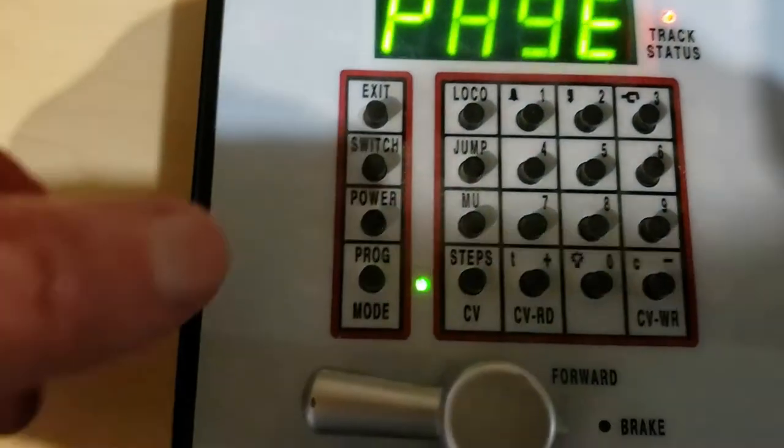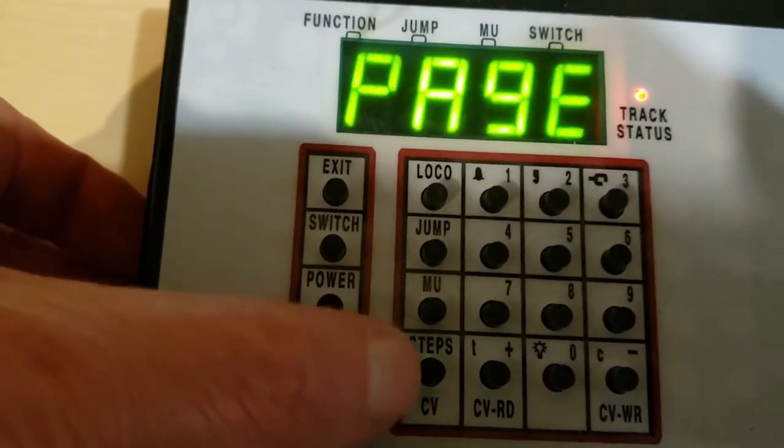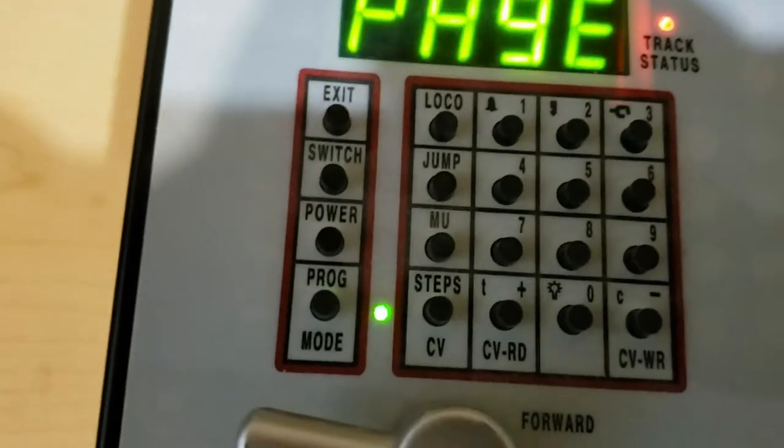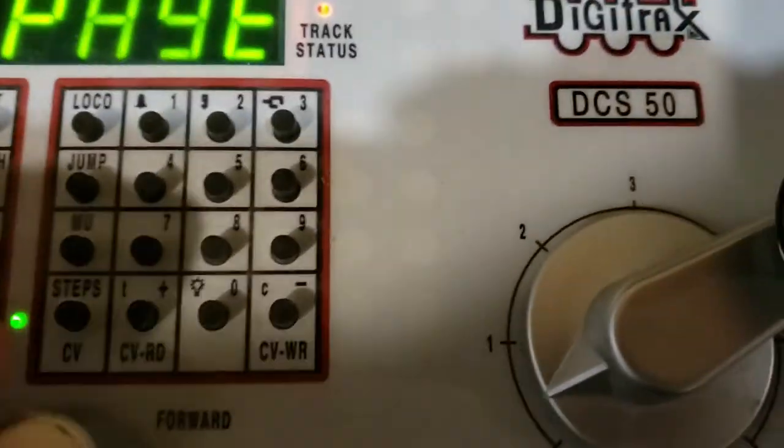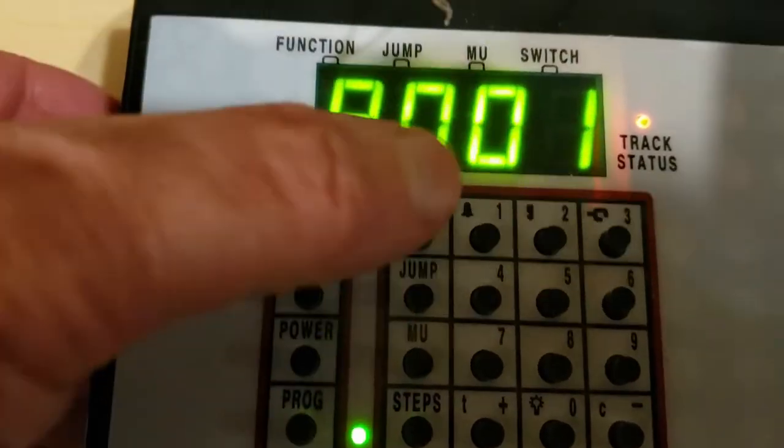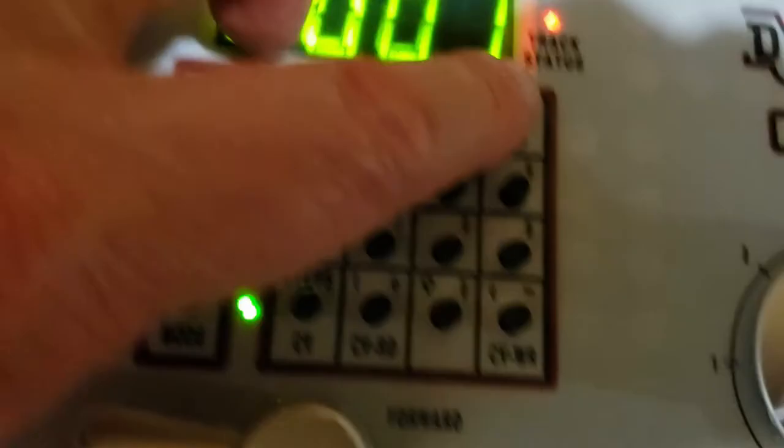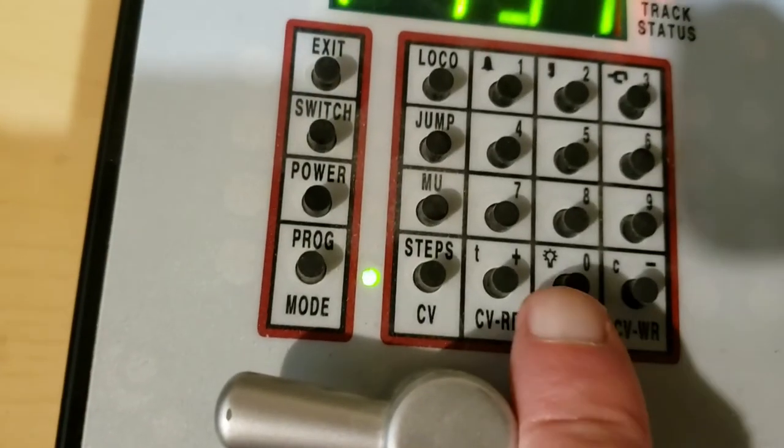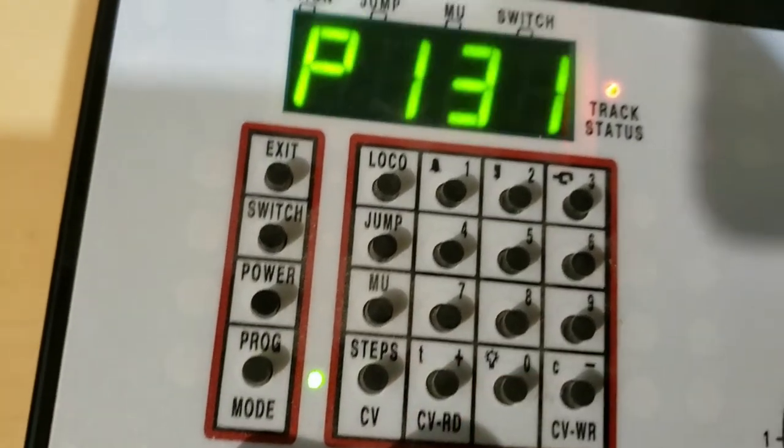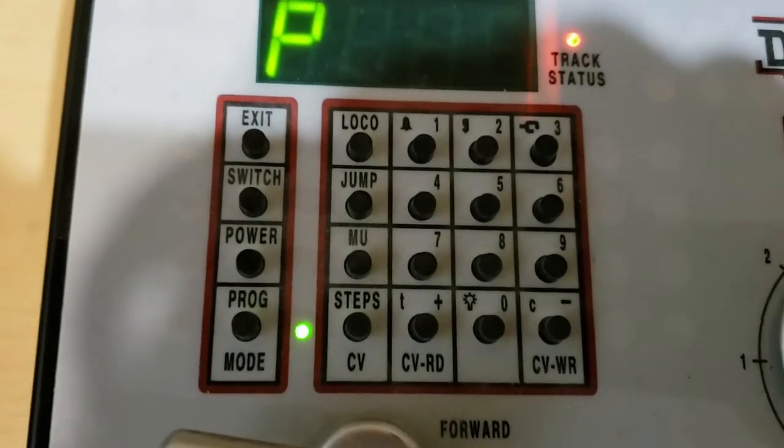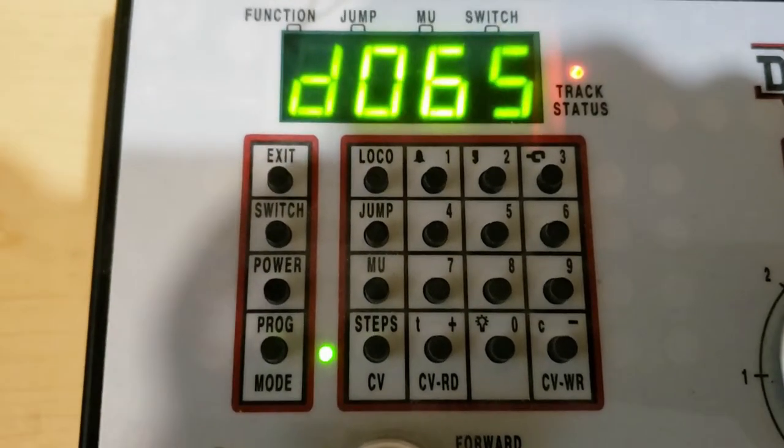So first we'll start with the RS3, like I said. So I hit the program button, and now I'm hitting the CV button, as you can see. So it's CV, and I'm hitting CV131, which is the exhaust sound. Then I push the CVRD, which is CVRE, and the volume is showing as 65.